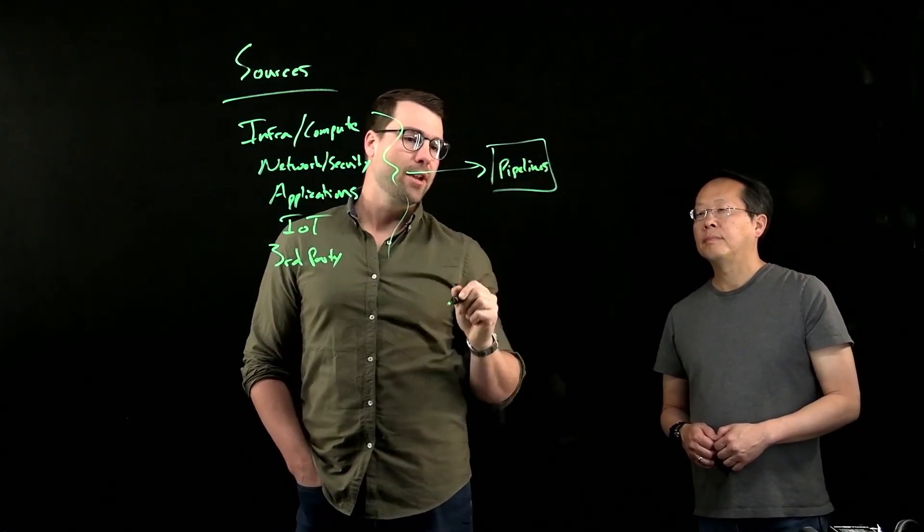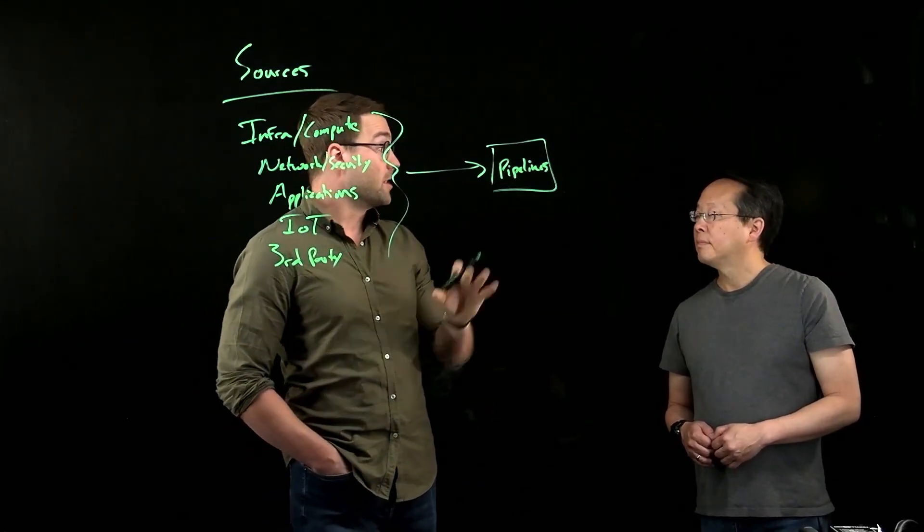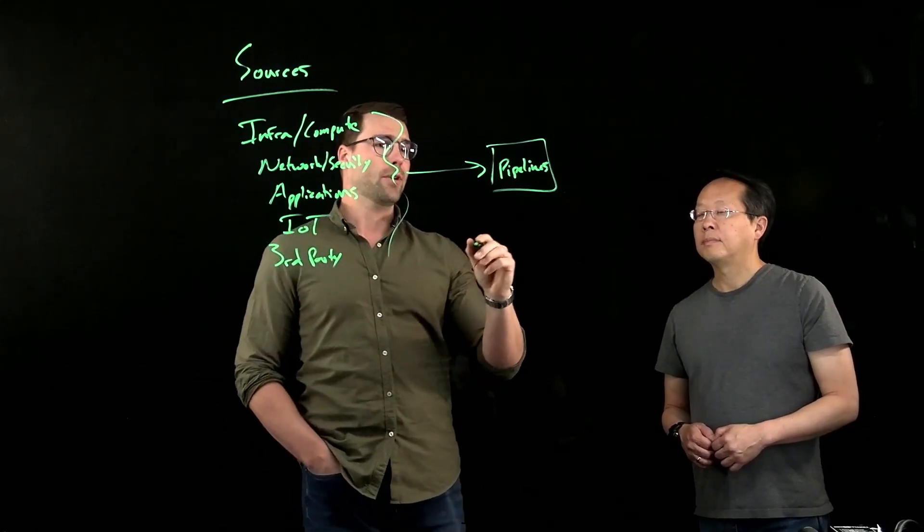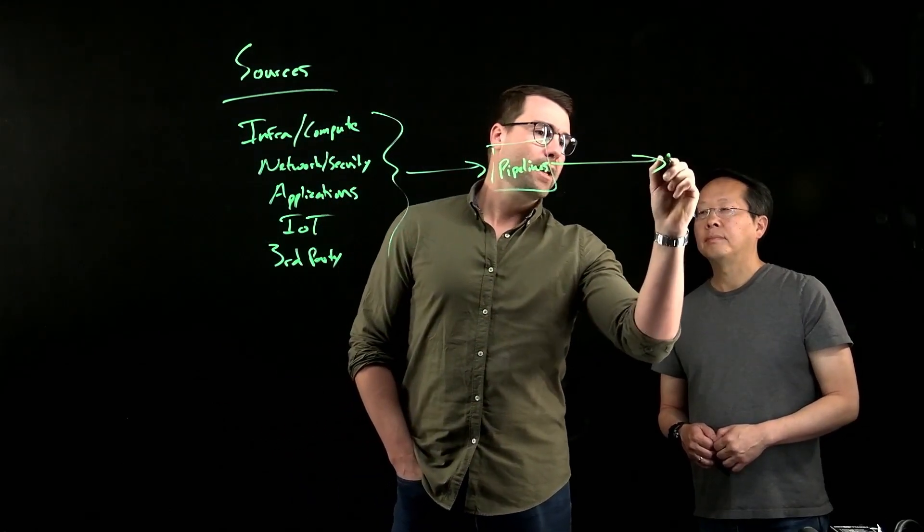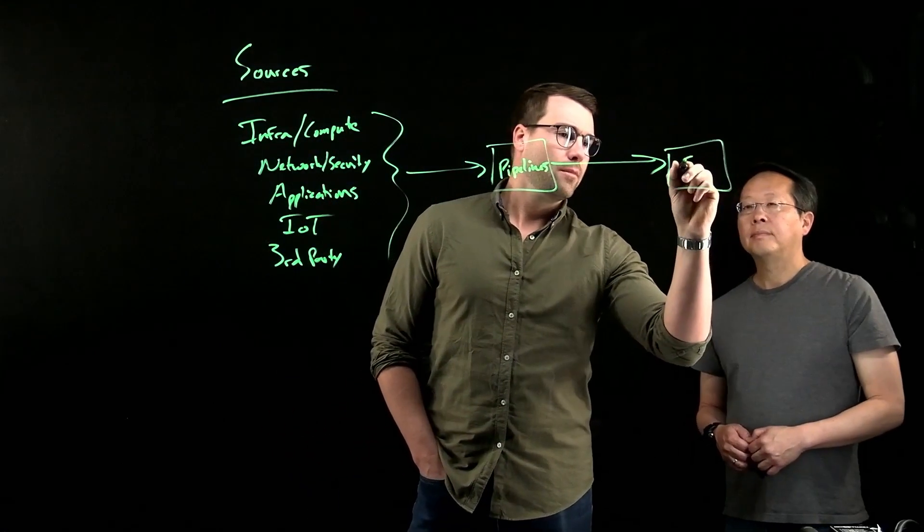And we'll discuss some of the operations that we can apply on it. But one of them is the ability to route that data. Now you have full control over it. So we can send some of that data to object store like S3.